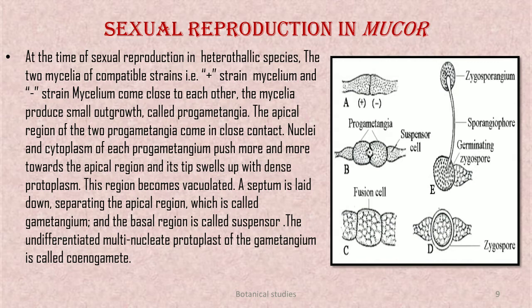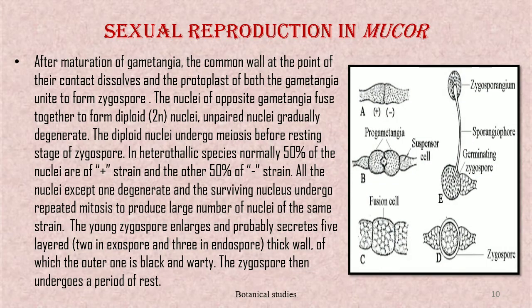The apical regions of the two progametangia come into close contact. The nuclei and cytoplasm of each progametangium push more and more towards the apical region, and the tips swell up with dense cytoplasm. This region becomes vacuolated, and a septum is laid down separating the apical region — called the gametangium — from the basal region, called the suspensor. The undifferentiated multinucleate protoplast of the gametangium is called a synogamete.